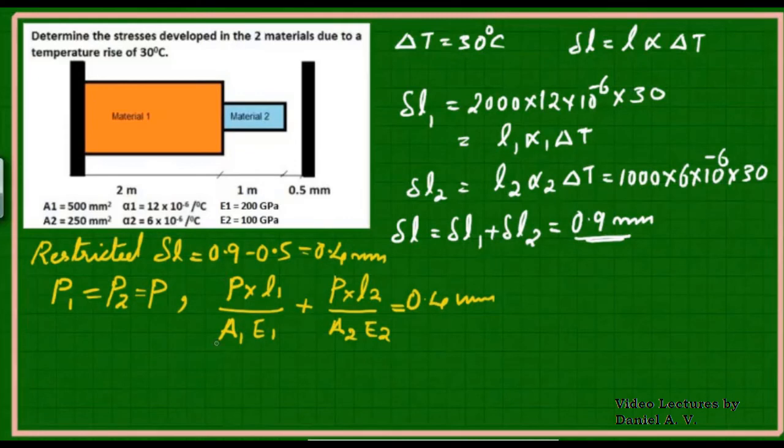From this equation, we can determine the value of P. When we substitute the different values, we are going to get the value of P as 666.7 N.